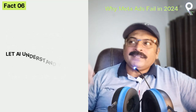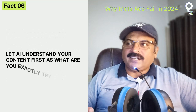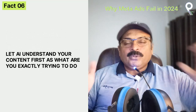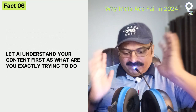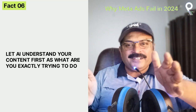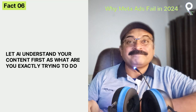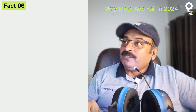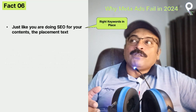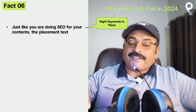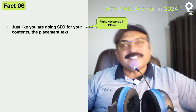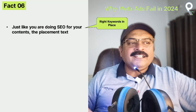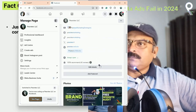You have to let the AI understand your content first — what are you exactly trying to do? Just like you do SEO for your content, write keywords in your placement text. You can type your placement text so the algorithm knows what your ad is about.